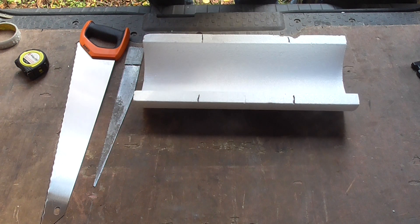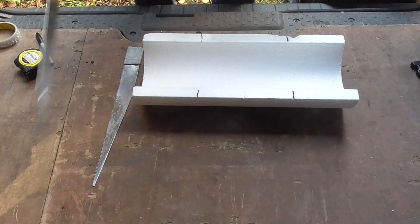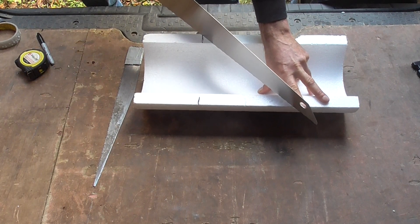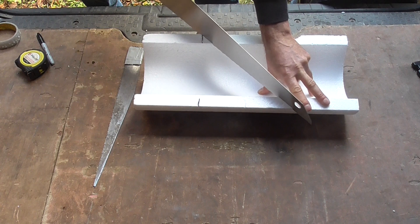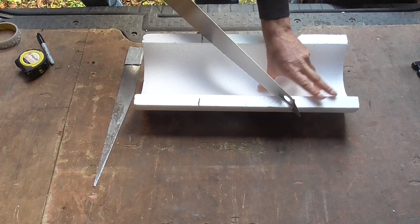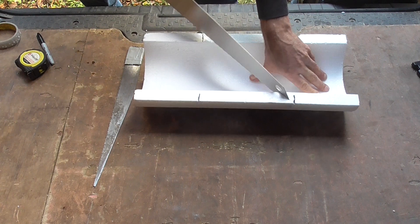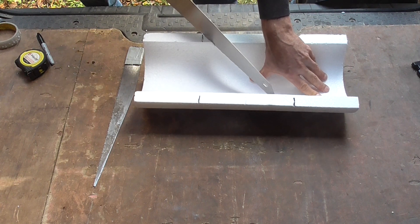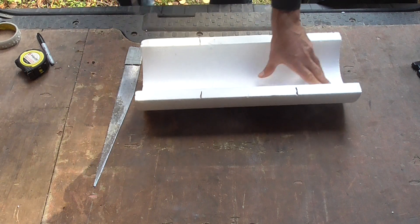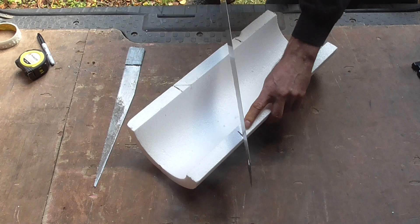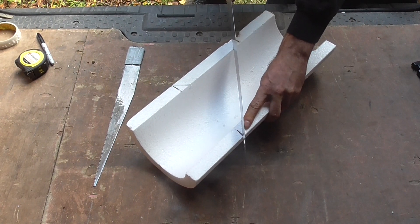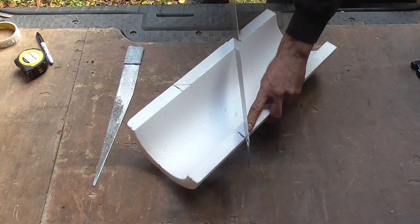Right, so what we do now, take our saw and we cut across the diameter like this. And again on this side, you don't cut all the way through when you first start out.